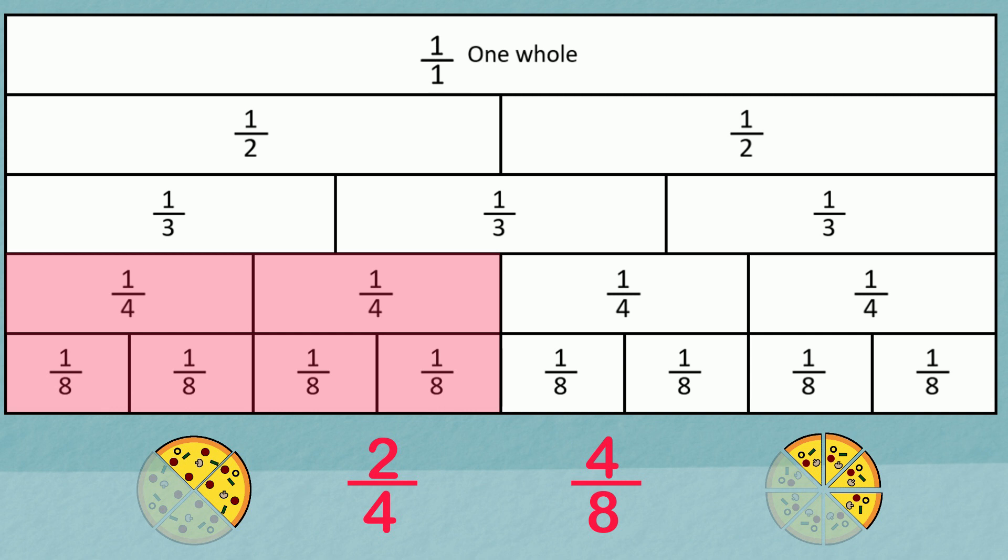Can you see another fraction that is equivalent to these two? One half. The simplest way of expressing how much of the pizza both Sam and Lily have eaten is to say one half. One half, two quarters and four eighths are all equivalent fractions.